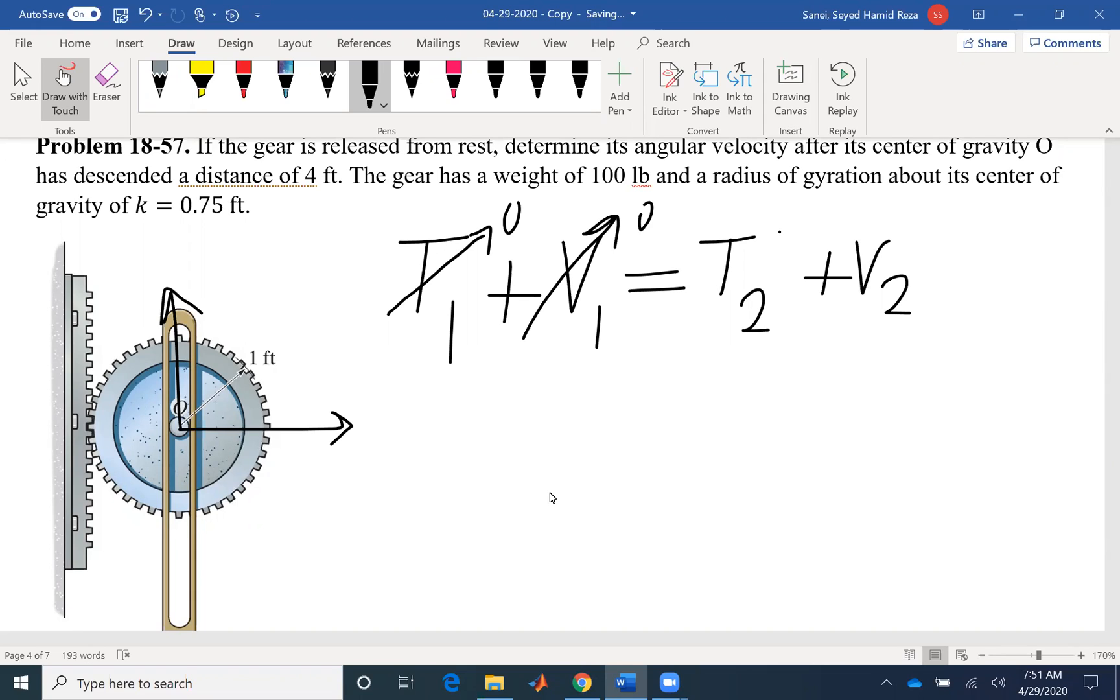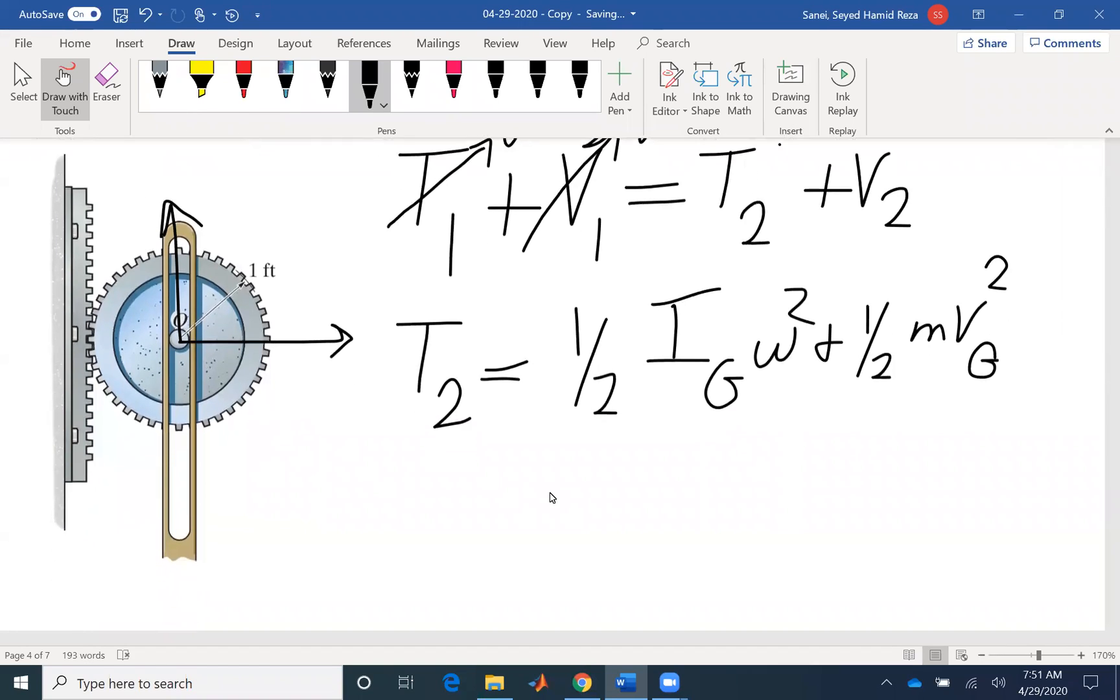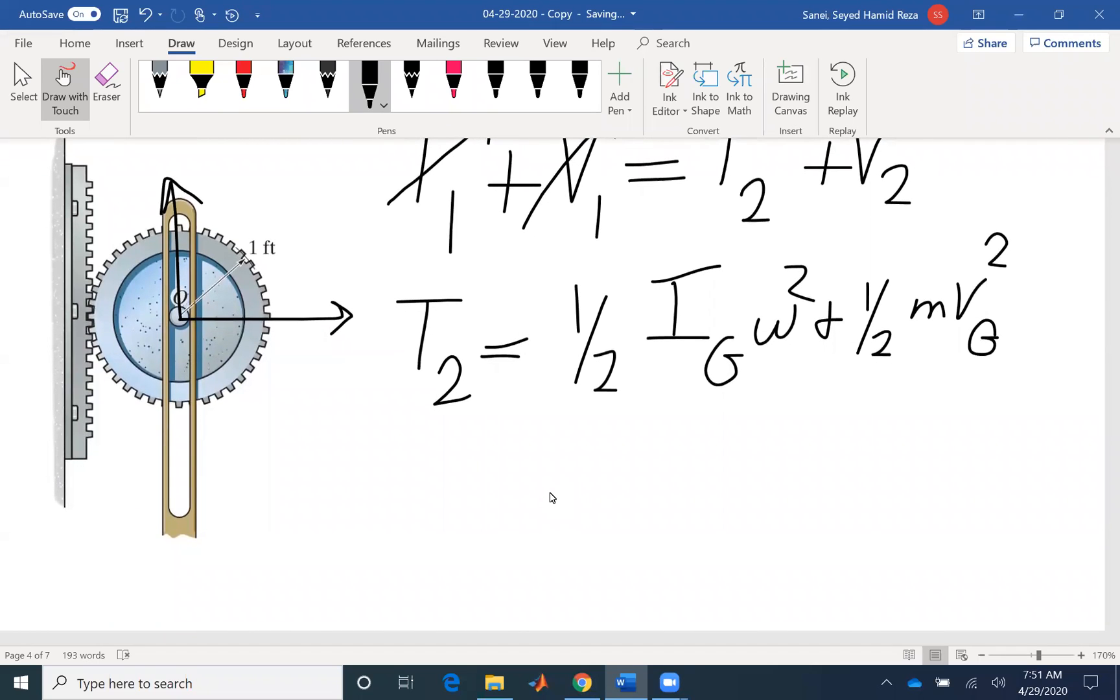So T, the kinetic energy, I know the equation is half Ig omega squared plus half M Vg squared. Because I don't want to find Vg and omega, sometimes it's easier to write about a fixed point, which is here.